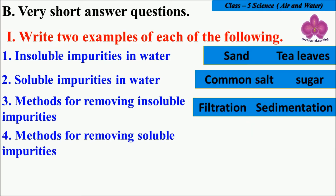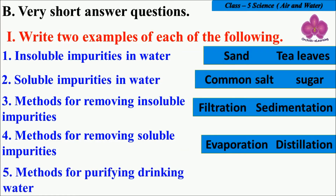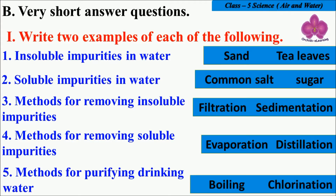Methods for removing soluble impurities: Evaporation and Distillation. And the last is methods for purifying drinking water: Boiling and Chlorination.